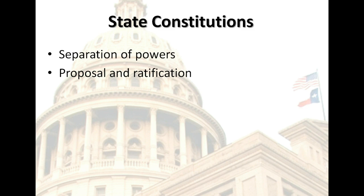State constitutions typically include provisions for separation of powers, legislative powers, executive powers, judicial powers, local governments, taxation and finance, and a bill of rights. States tend to have constitutions that are considerably longer than the U.S. Constitution. Most are burdened with details that attempt to spell out governmental authority and limit governmental power. Most states avoid the politically difficult process of writing a new constitution, instead adopting governing documents by adding periodic amendments through a two-step process of proposal and ratification.